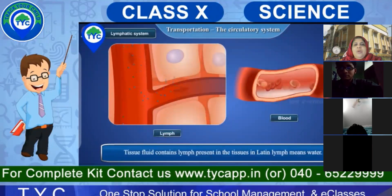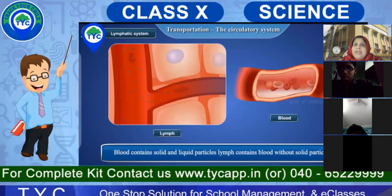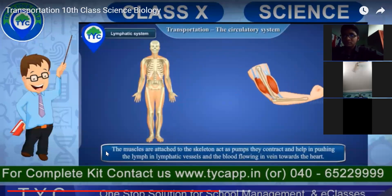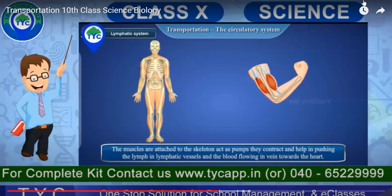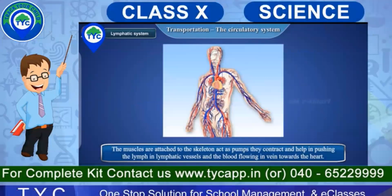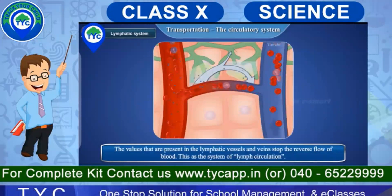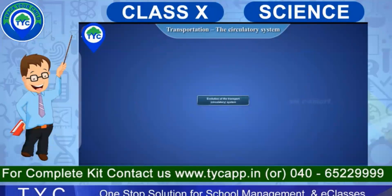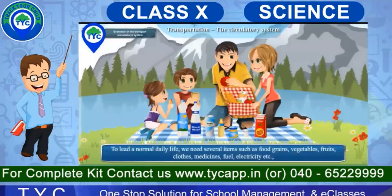The Latin meaning of lymph is 'water' — it is full of water and you don't find any solid particles, whereas blood contains both solid and liquid particles: white blood corpuscles, red blood corpuscles, thrombocytes. Muscles are attached to the skeleton and act as pumps; they contract, and the valves present in the lymphatic vessels and veins stop the reverse flow of blood. This is our lymphatic system circulation.